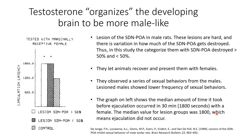I want to talk about the role of some of these sexually dimorphic brain areas and how we know they're involved with certain processes. One basic technique in neuroscience to show whether a brain area is important for a function is to lesion it and see what happens to behavior. This is a famous experiment where they lesioned the SDN-POA in male rats. These lesions are very hard because the SDN-POA is pretty small, and there's variation in how much gets destroyed. In this study, they categorized SDN-POA destruction as greater than or less than 50%.